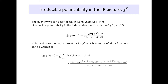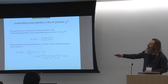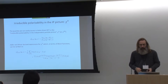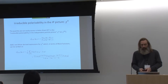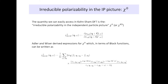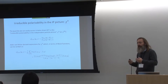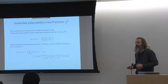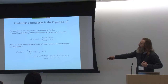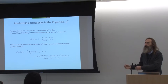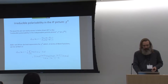As a recap: the quantity we have access to is the irreducible polarizability in the independent particle picture, given by the Adler-Wiser expression, and evaluating this scales as N to the power four. Why N to the power four? For a large system: G and G-prime are sums over plane waves, and the number of plane waves in our basis scales with system size; N and N-prime are band indices which also scale with system size. So we have four factors of system size — hence N to the power four.